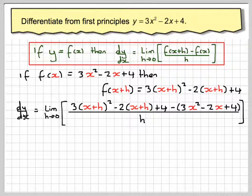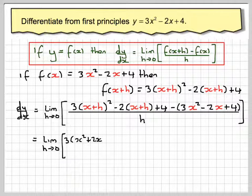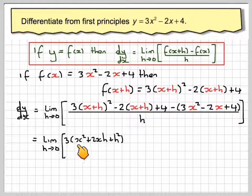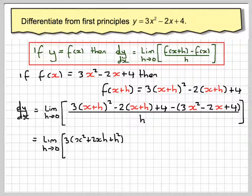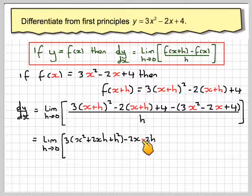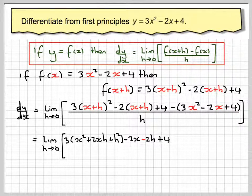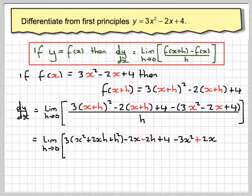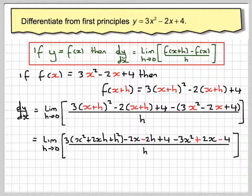Now this looks quite horrendous, but it actually is not. This here needs to be expanded. The limit as h goes to 0, expanding this is like expanding a plus b squared. So it is going to be 3 times x squared plus 2xh plus h squared. Taking the 2 in, we get minus 2x. Don't forget to change the sign, we have minus times a plus, minus 2h, plus 4, minus 3x squared. Minus times a minus makes plus 2x, and minus times a plus makes minus 4, all over h.